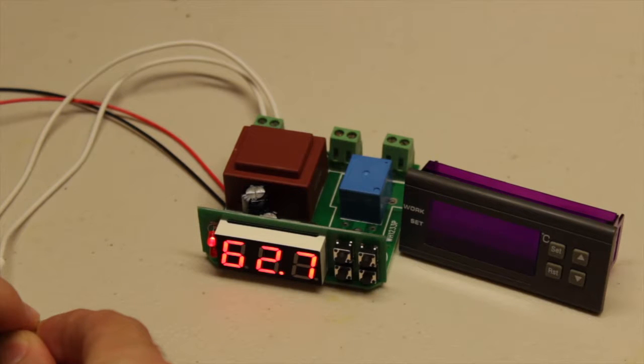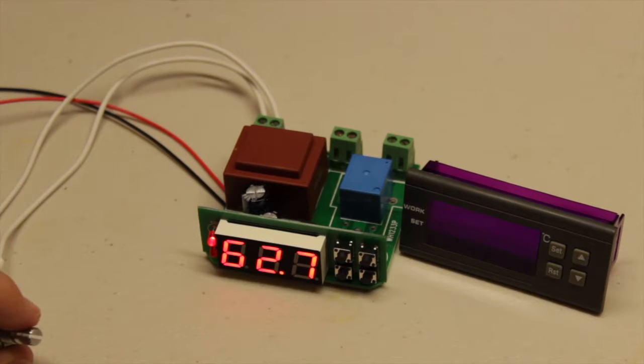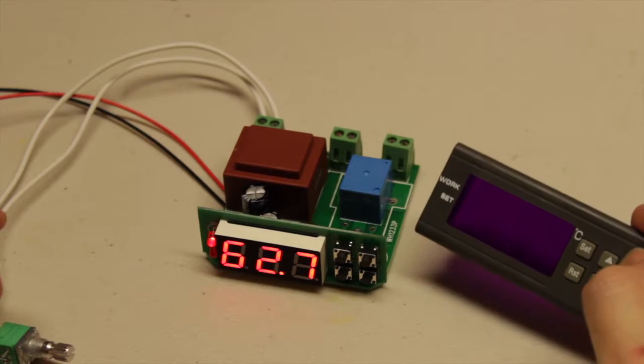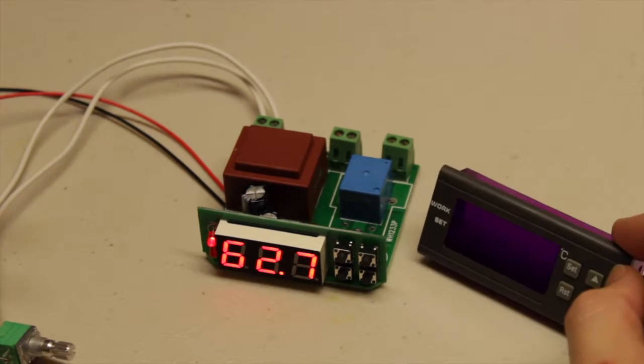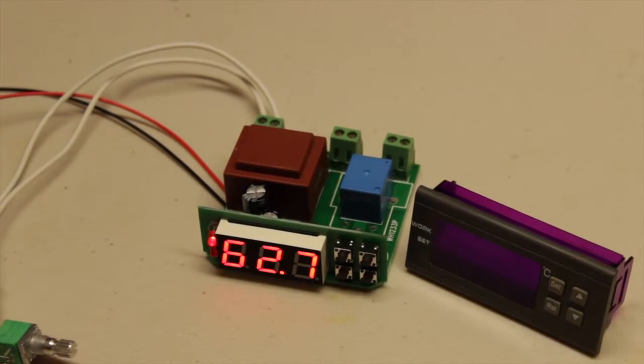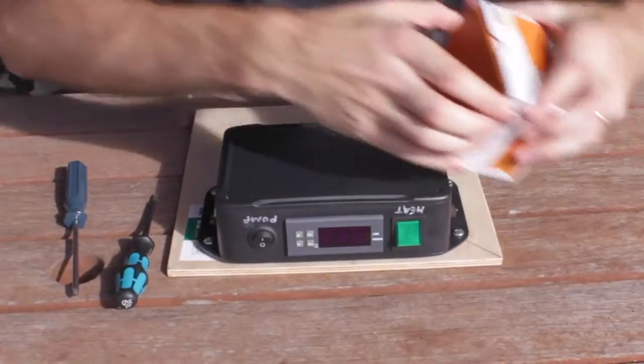There we go, 62.7 and now it's back on again. So that's the reason I'm not too happy with this old one over a modern STC-1000, and that's the reason I'm going to be replacing it in this one, because I just want that more accurate control while I'm mashing.